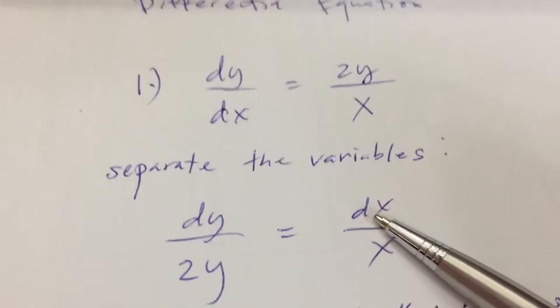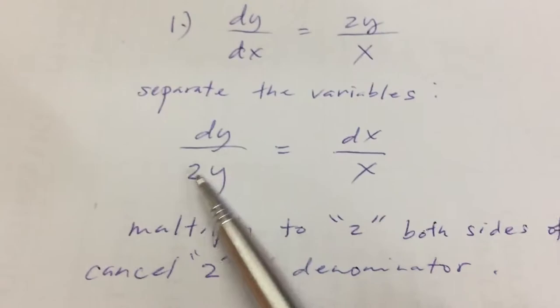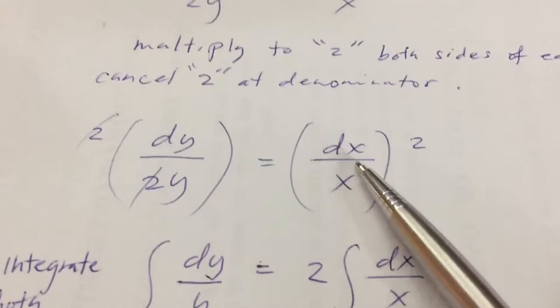Now we will multiply by 2 in order to eliminate the 2 at the denominator. By multiplying both sides of the equation, you will see the 2 is already eliminated and 2 is already included here.